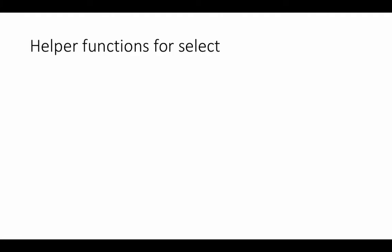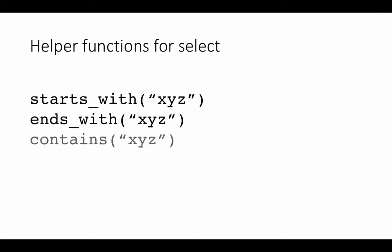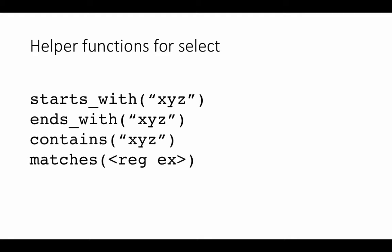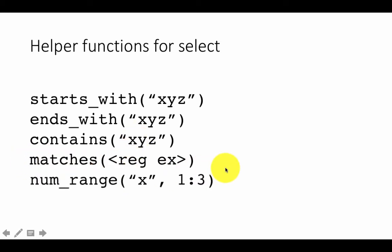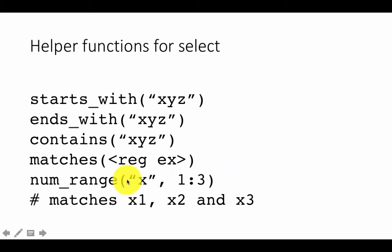There are lots of other helper functions. We've looked at starts_with and contains; you could also use ends_with, or matches with a regular expression — we haven't covered regular expressions yet but will later in the course. You could also use num_range('x', 1:3), which selects columns named x1, x2, or x3. So you have all of these options with helper functions that you can use along with select.